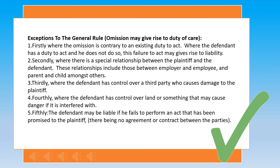Thirdly, where the defendant has control over a third party who causes damage to the plaintiff. For example, a prisoner assaulted a fellow inmate and the Home Office was held liable for failing to prevent the commission of the assault. Fourthly, where the defendant has control over land or something that may cause danger if it is interfered with. For instance, an occupier of land has a duty to ensure the safety of his visitors; if he has anything dangerous on the land, he must take responsible steps to minimize, reduce, or avoid any possible injuries. Fifthly, the defendant may be liable if he fails to perform an act that has been promised to the plaintiff, even where there is no agreement or contract between the parties.